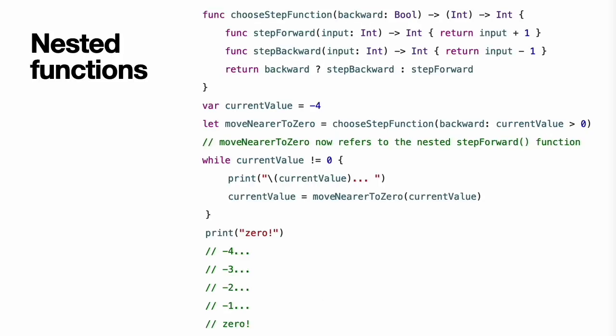Nested functions. All of the functions encountered so far in this chapter have been examples of global functions, which are defined at a global scope. You can also define functions inside the bodies of other functions, known as nested functions. Nested functions are hidden from the outside world by default, but can still be called and used by their enclosing function. An enclosing function can also return one of its nested functions to allow the nested function to be used in another scope. You can rewrite the chooseStepFunction(backward:) example above to use and return nested functions.